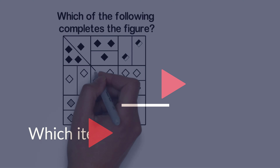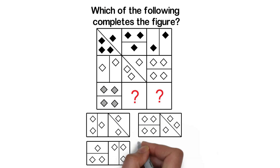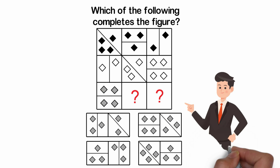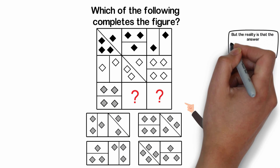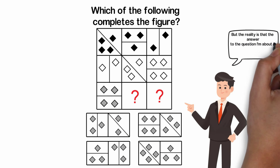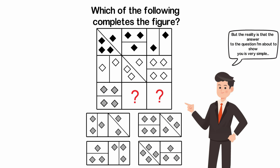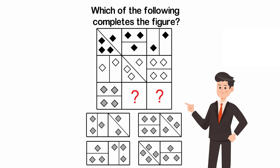When you see a question like this, you might ask yourself how it could possibly be even more confusing, but the reality is that the answer to the next question is very simple. You are presented with a 3-by-3 matrix; two of the shapes in the matrix are missing, located in the bottom row. You have four possible choices — A, B, C, and D — so take a close look.